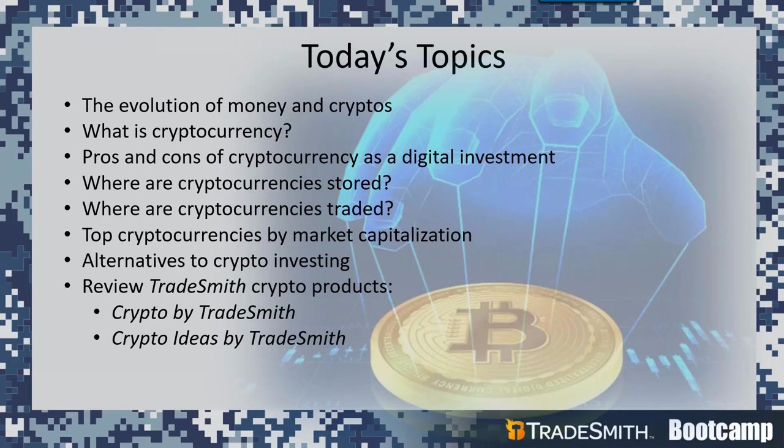In today's discussion, I'd like to address the following questions and discussion points. We'll take a look at the evolution of money and cryptocurrencies. We'll answer what is a cryptocurrency and take a look at the pros and cons of cryptocurrency as a digital investment. We'll also discuss where cryptocurrencies are stored and how they're traded. We'll check out the top cryptocurrencies by market capitalization. And for those who don't want to invest in cryptocurrencies, we'll look at some alternatives to crypto investing. We'll end with a brief overview of the Tradesmith cryptocurrency products available to help you track and manage your cryptocurrency portfolios and find new potential investment opportunities.